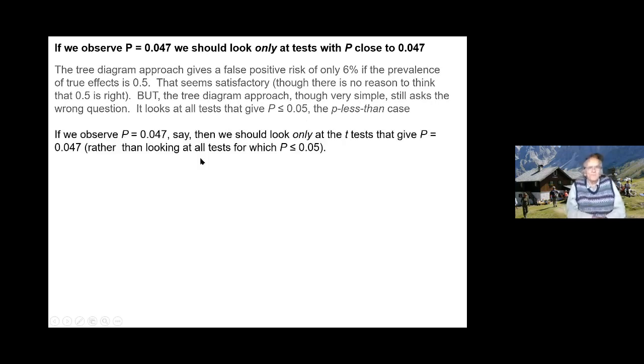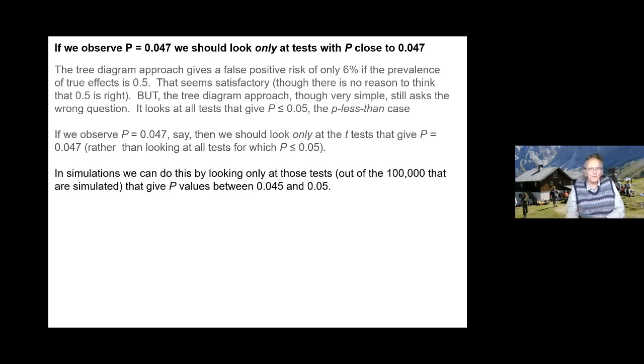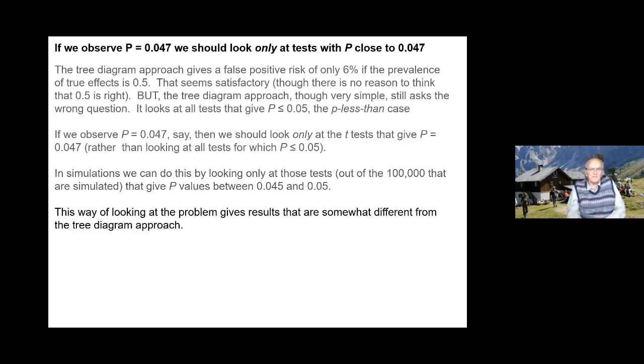If we observe p = 0.047, then we should look only at tests that give p = 0.047, rather than looking at all tests which give p ≤ 0.05. If we're doing it with simulations, as in my 2014 paper, you can't expect any tests to give exactly 0.047, but what you can do is look at all the tests that come out with p in a narrow band around there, say between 0.045 and 0.05.